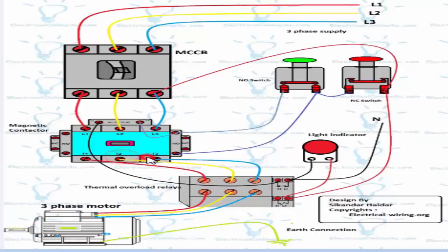From the T1, T2, T3 main contacts of magnetic contactor which is the output, the supply goes to the thermal overload relay main contacts, and from the output of the main contacts this supply goes to the three phase motor.